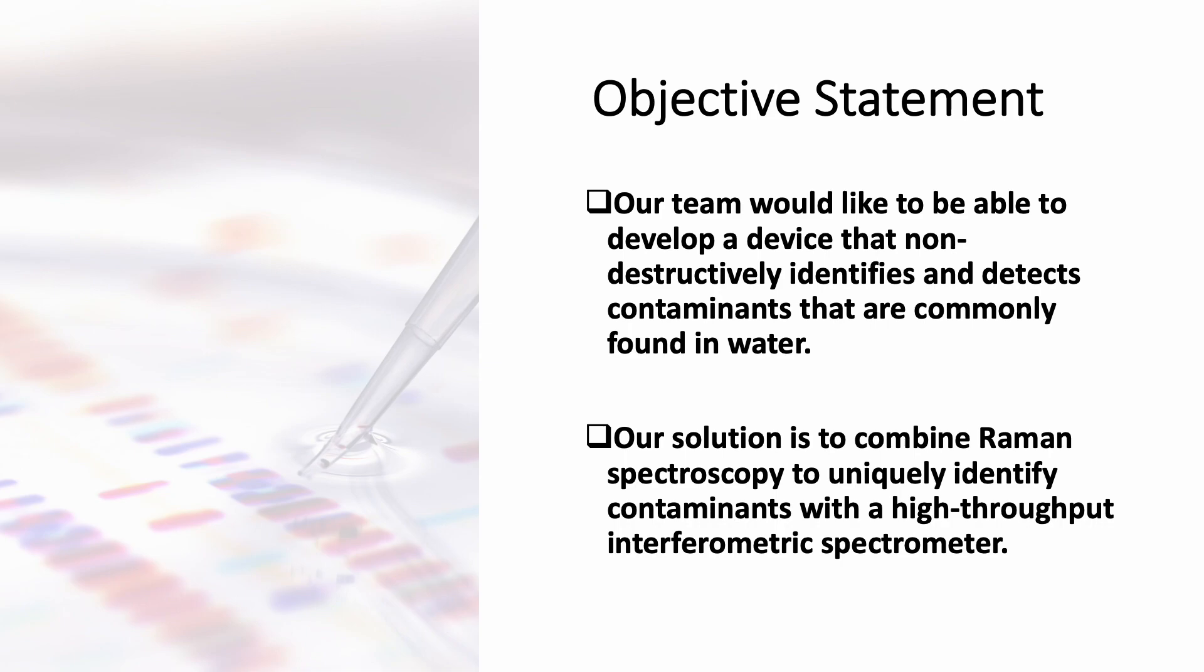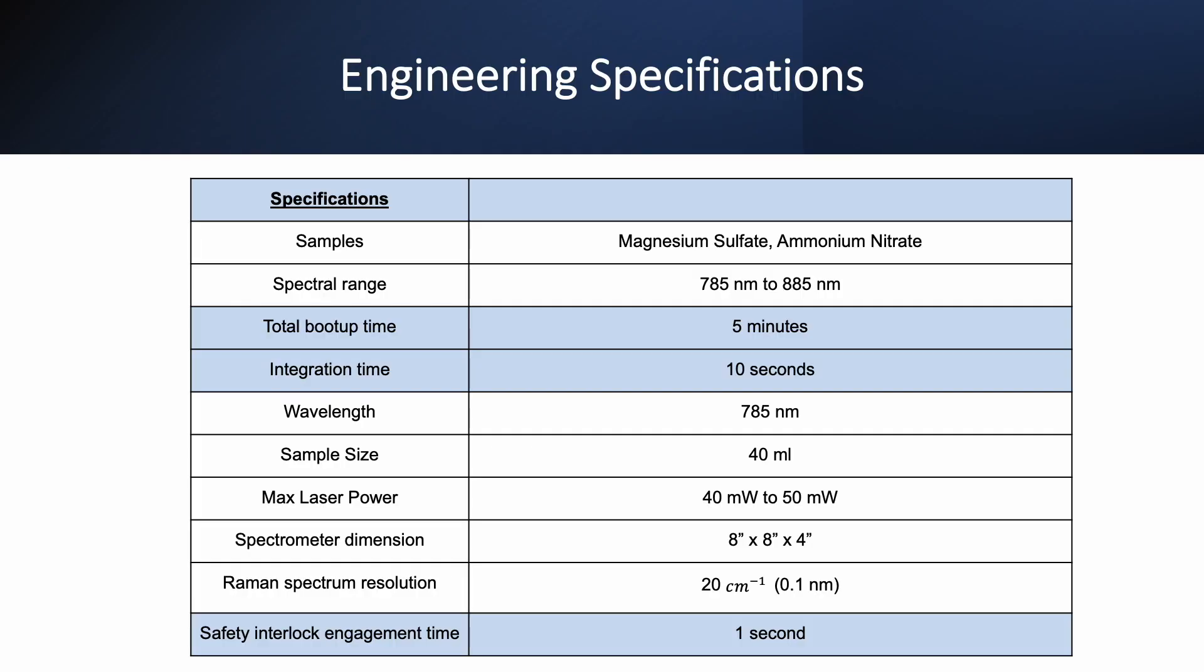Our spectral range will be from 785 nanometers up to 885 nanometers. This should be able to account for the types of water contaminants that we intend to measure. This is our engineering specifications table. This table has been updated from the last one to show more specifications and how they will be implemented into our design.